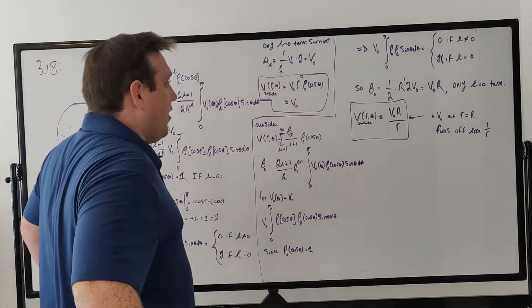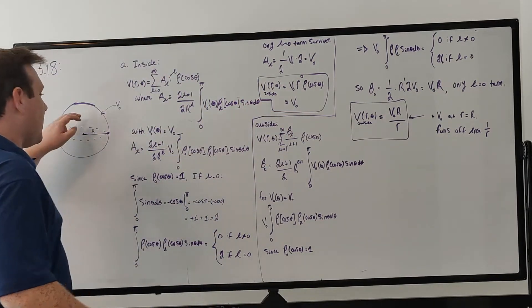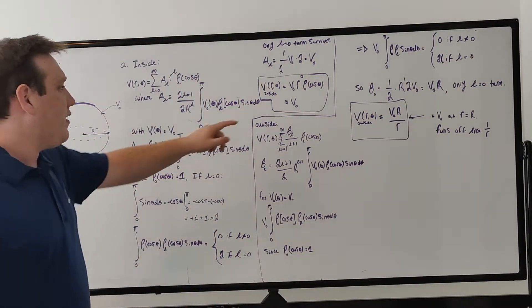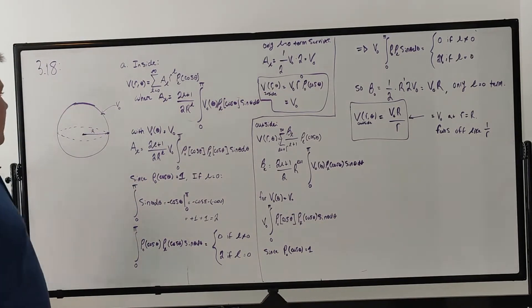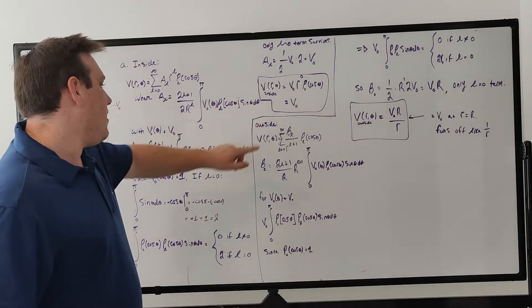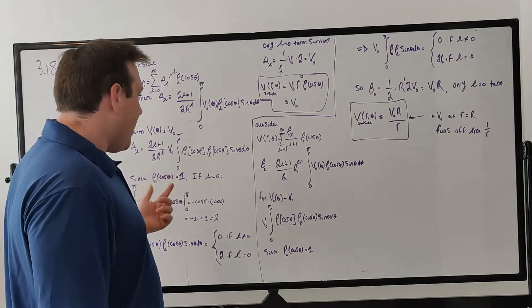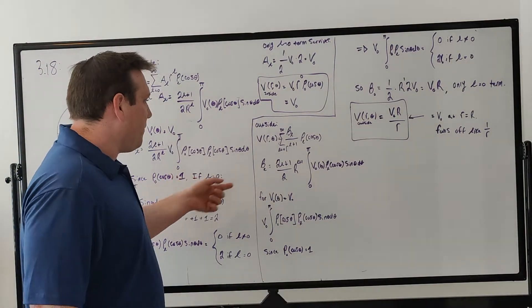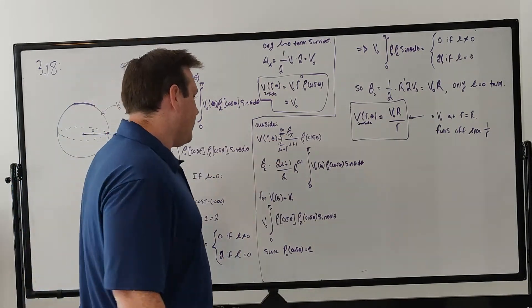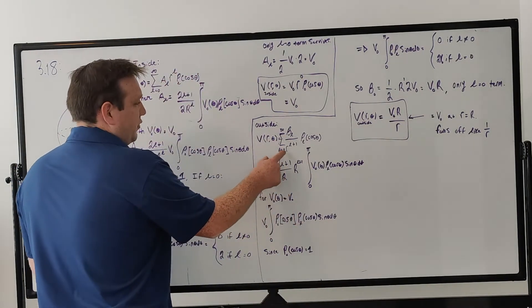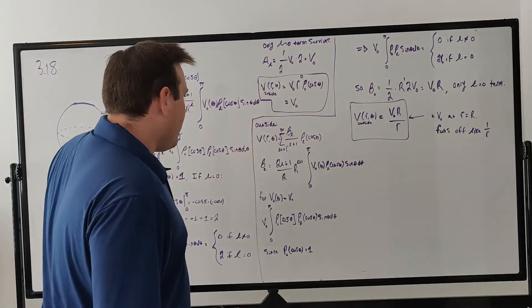Now that we have the potential inside equal to V-naught, we move to the outside portion. This comes from example 3.7. In the outside region, the potential is given by a summation from L equals zero to infinity of B_L over R to the (L+1), times the L-th Legendre polynomial in terms of cosine theta.